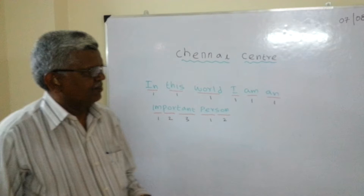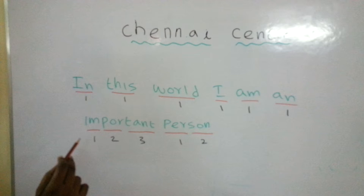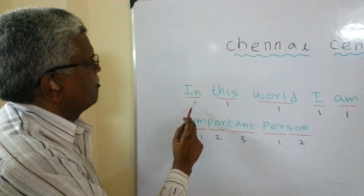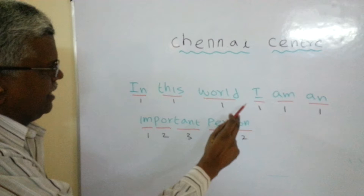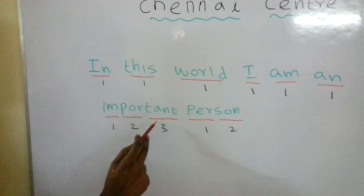In this sentence, in this word: 'I am an important person.' A syllable is called a sound. In only one sound: 'this' — one sound, 'word' — one sound, 'I' — one sound, 'am' — one sound, 'an' — one sound — all one sound. 'Important' — three sounds.